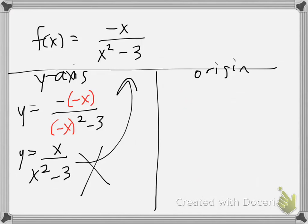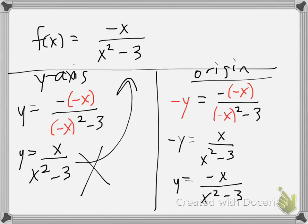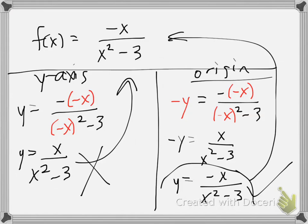Let's try origin symmetry. I am negating y and negating x — plugging negative x into the numerator and denominator. Simplifying the negatives with the squares gives x over x squared minus 3. Moving the negative to the other side gives negative x divided by x squared minus 3. Is this what we started with? Yes. So here's an example where we do have origin symmetry.